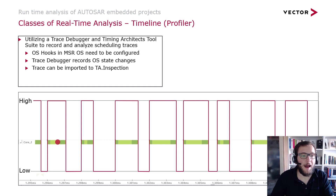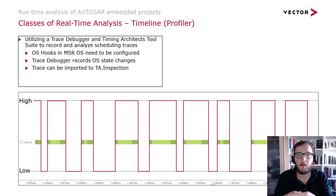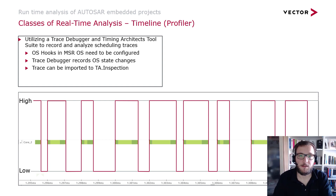So how do we get there? How can we actually get such a measurement? First of all you would need some tooling and also hardware for this approach. You would need to utilize a trace debugger in order to record such a trace, and then later you can import this trace into the Timing Architects tool suite and use the option inspection in order to analyze it.